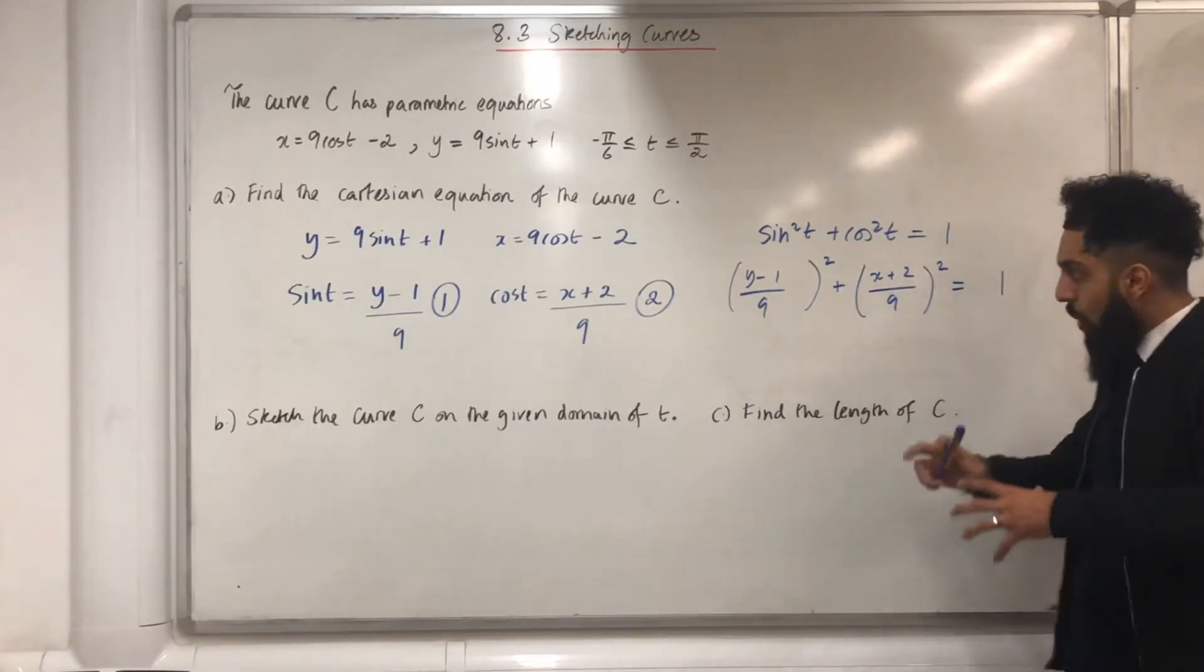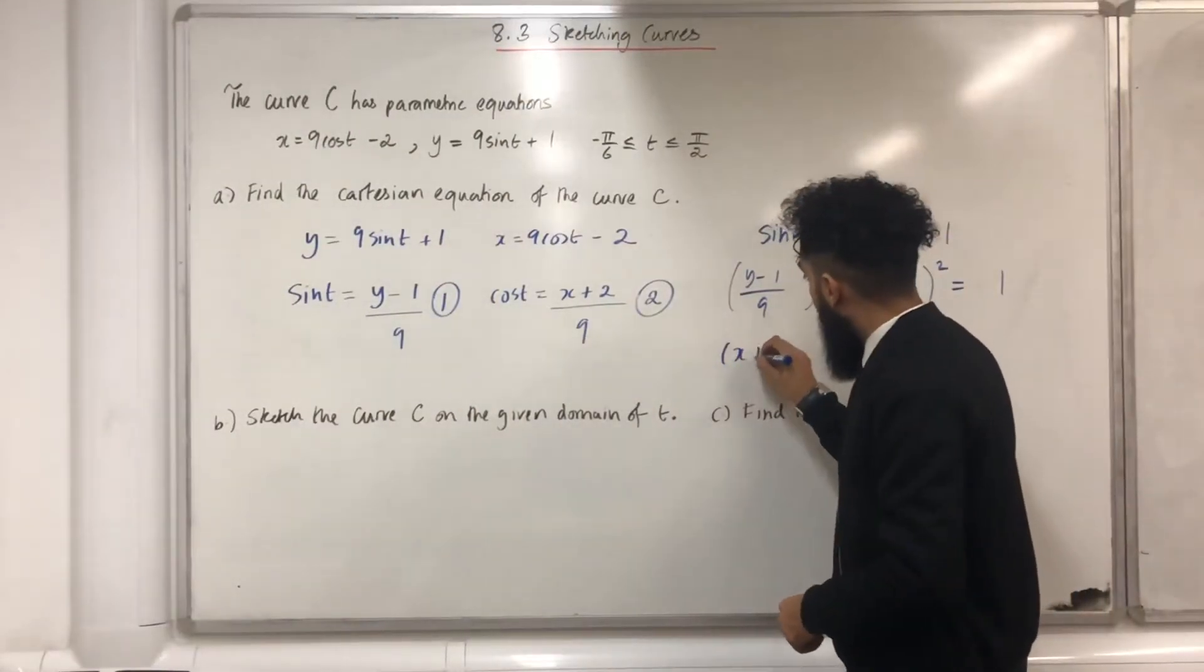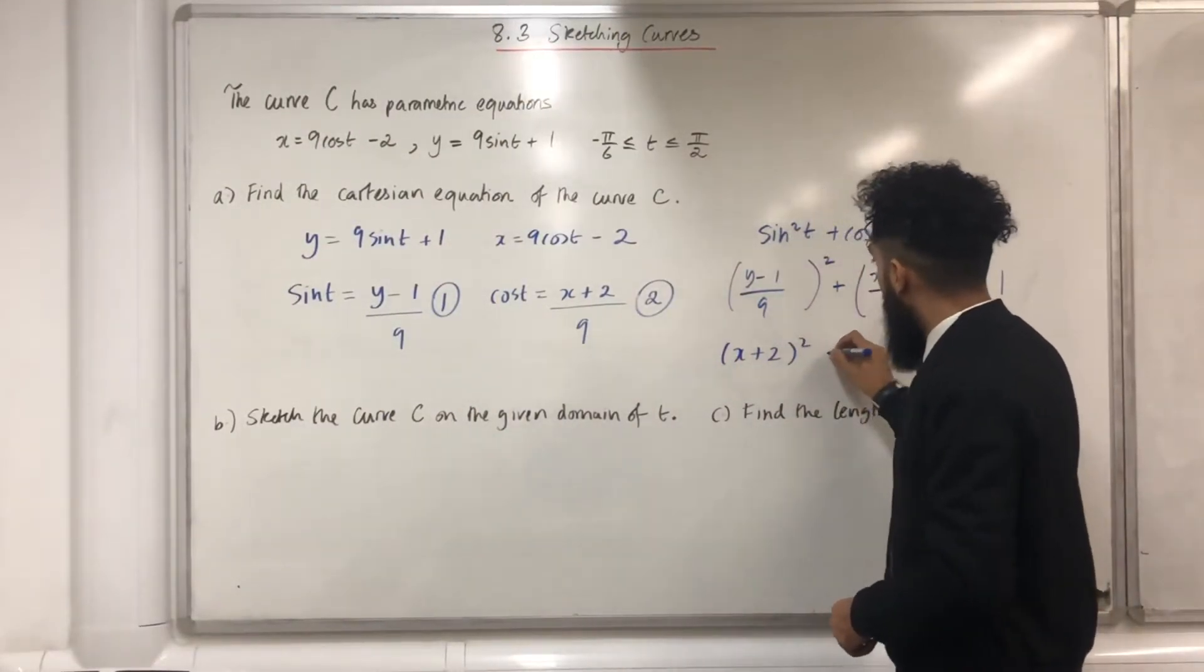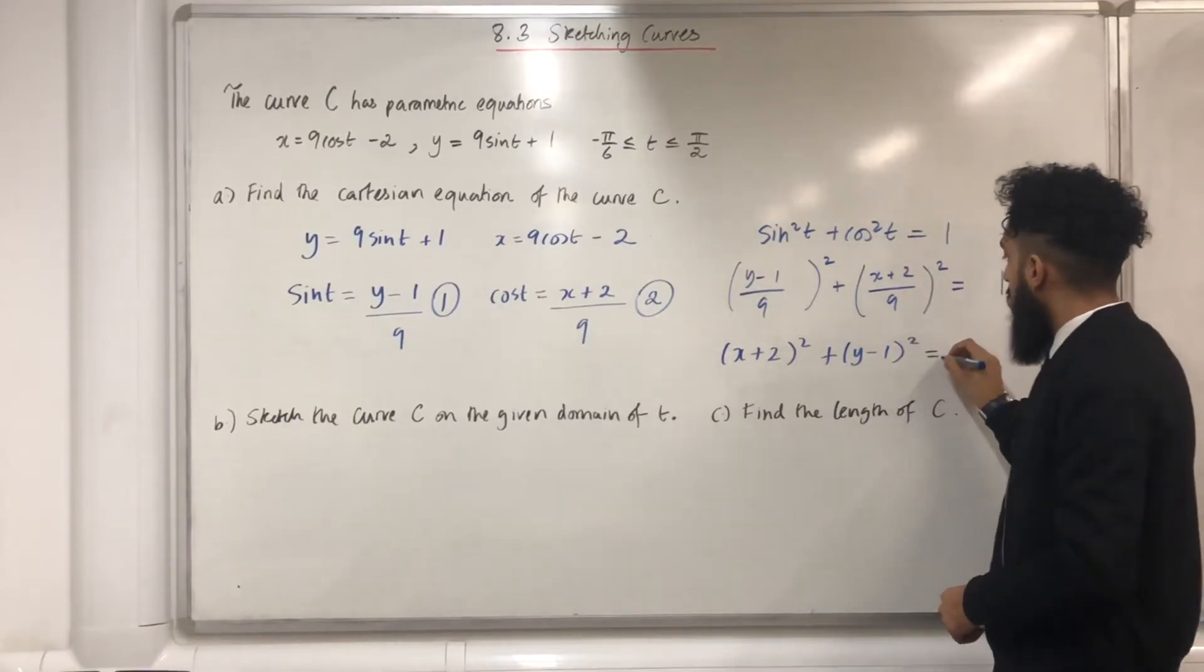Now all I need to do next is simplify this particular equation. X plus 2 in bracket squared plus y minus 1 in bracket squared is equal to 81.